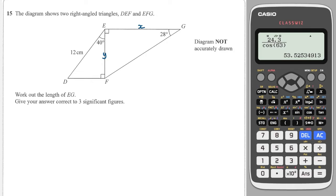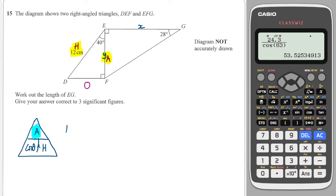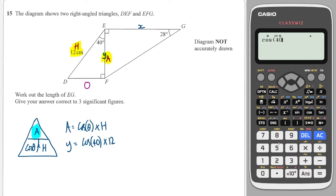Let's label the sides. We have opposite the angle, opposite the right angle is the hypotenuse, and here is the adjacent. The side that I have is H, and the side that I'm looking for is A, so that's cosine. I draw a triangle and write cosine of the angle is A over H. I'm looking for A, so I cover A, and that means I need to multiply the two at the bottom to get A. So A is equal to cosine of the angle times H. In this case, our A is labelled Y: cosine of 40, multiplied by H, which is 12, equals 9.19.